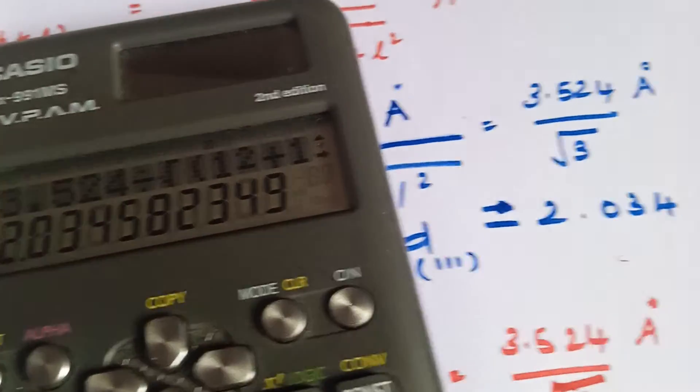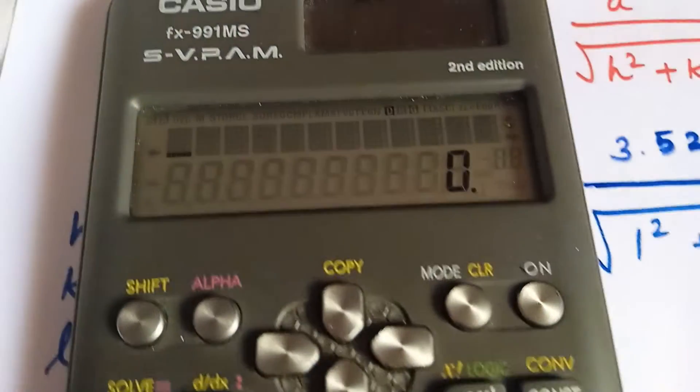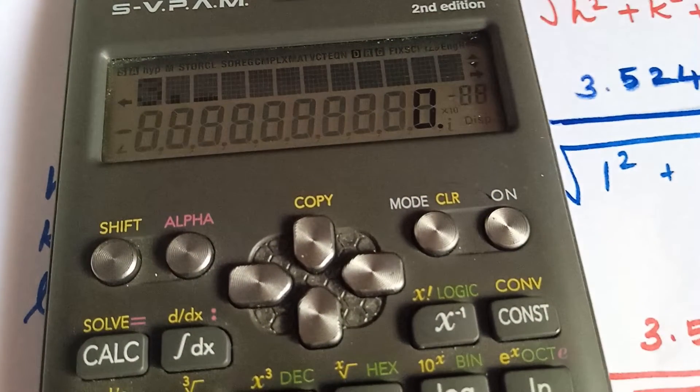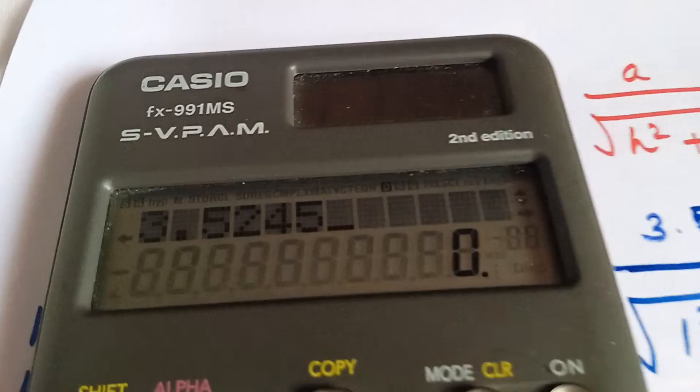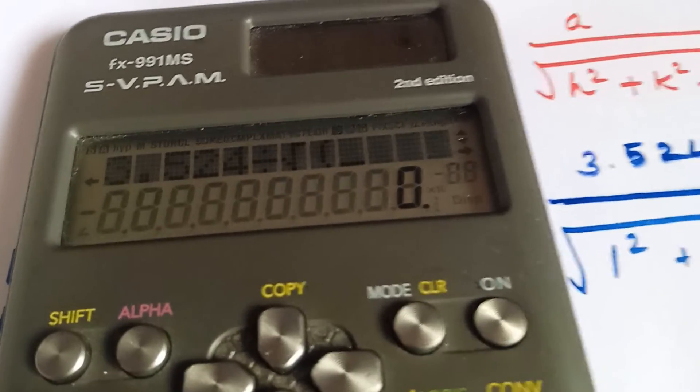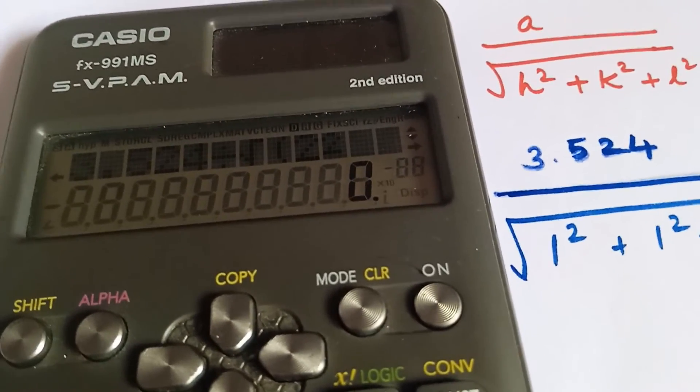Now, substituting the value of hkl in the formula 3.524 divided by root of 2 square plus 0 plus 0.